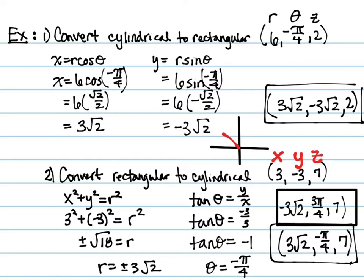But x = r cos θ, and if I plug in 6 for r, -π/4 for the angle theta, I can simplify this down, and x = 3√2. Very similarly for y, y = r sin θ, 6 is r, theta is -π/4, and this is -3√2.